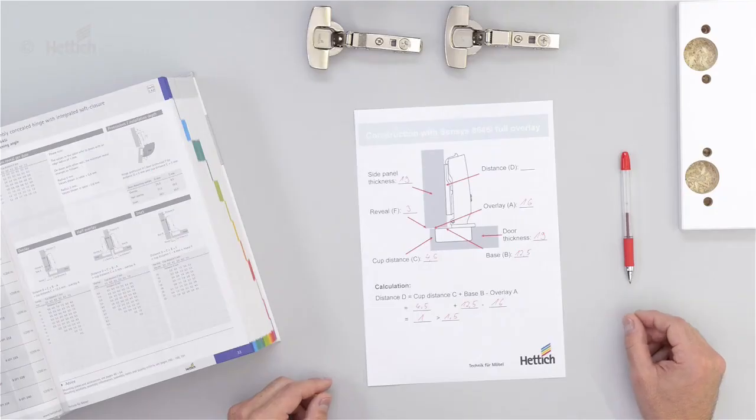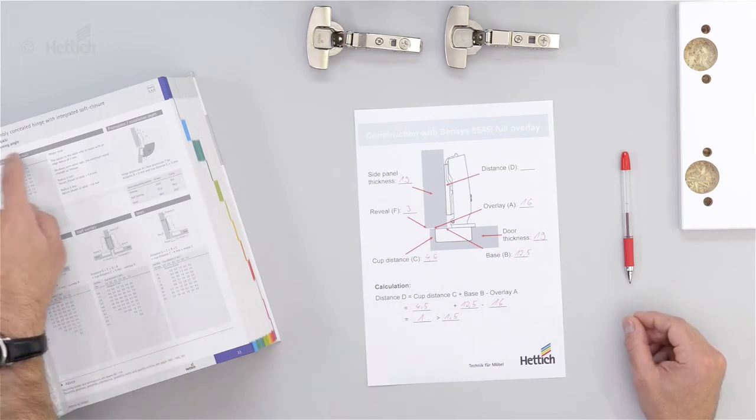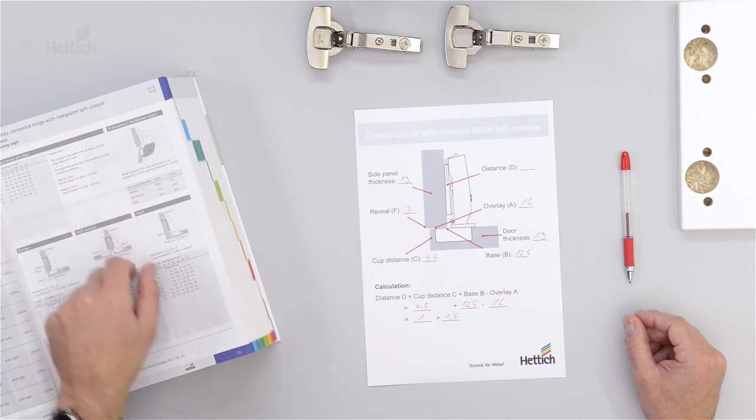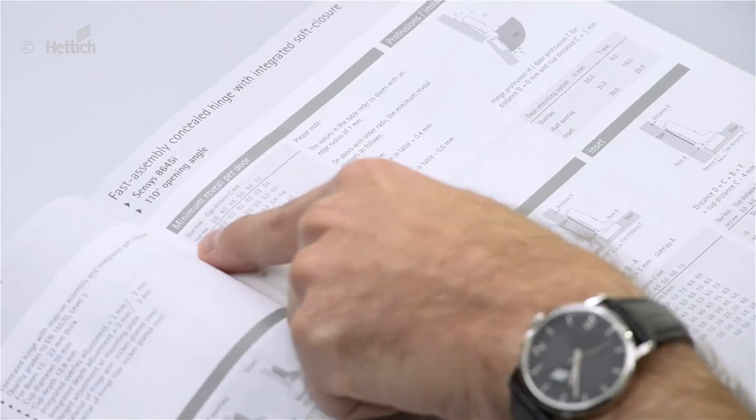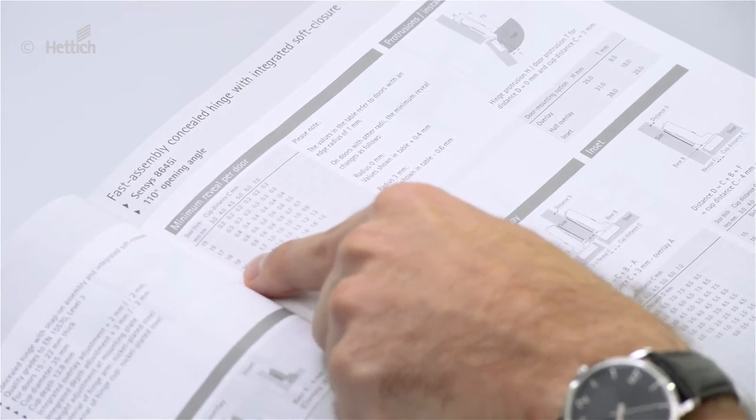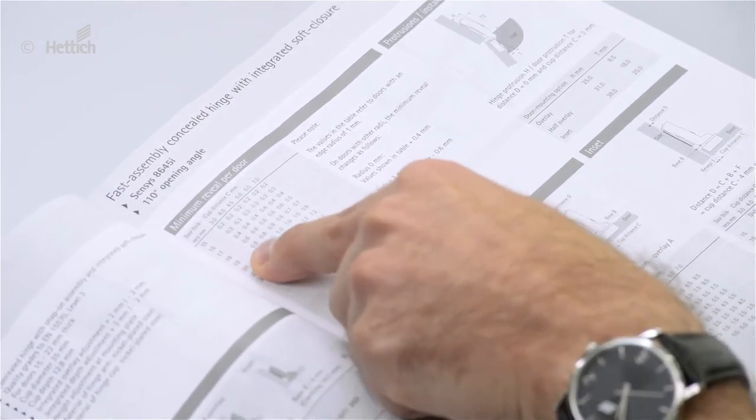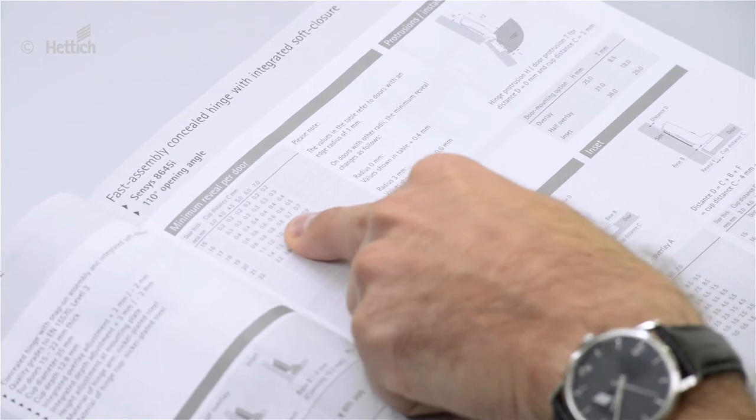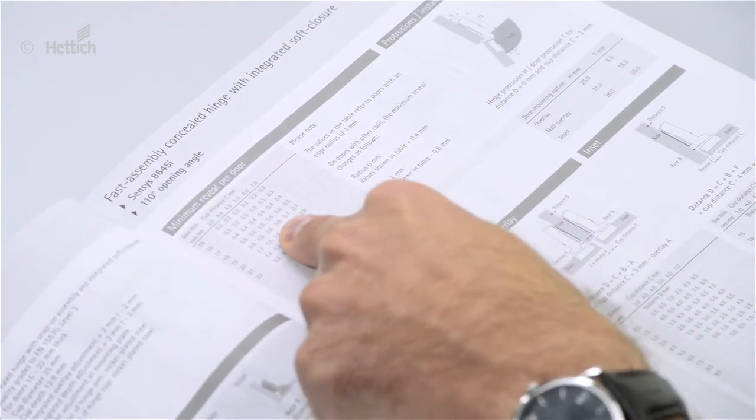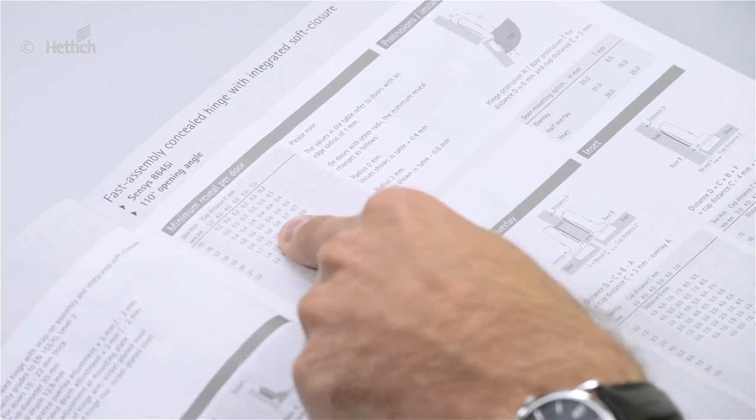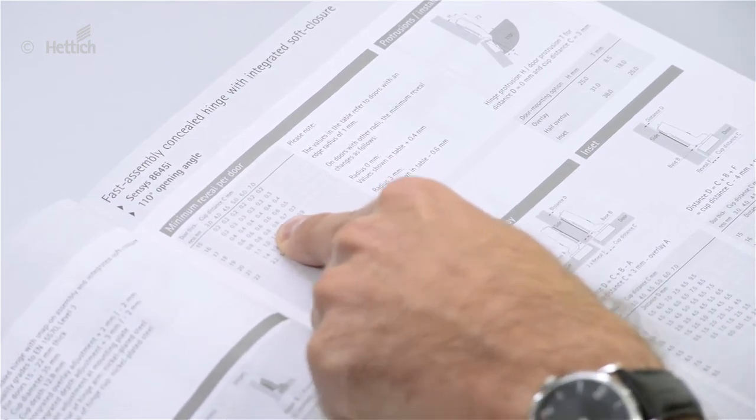In the last step, we have to cross-check the minimum reveal. We have a little table here in the catalog and the door thickness is 19 millimeters. That was given and also the cup distance C of 4.5 millimeters. So the minimum reveal has to be 0.8 millimeters.